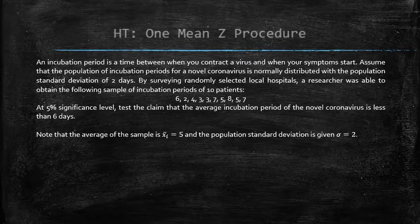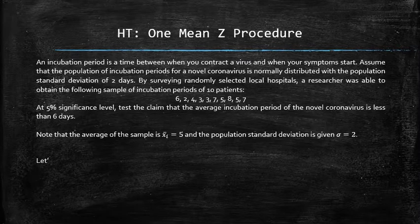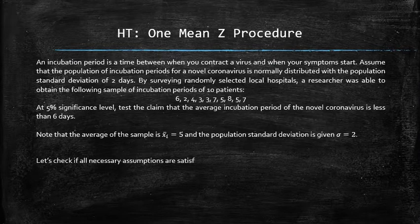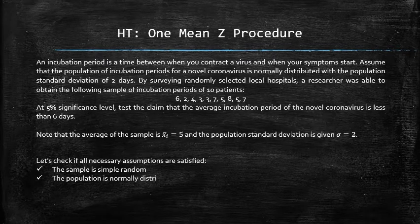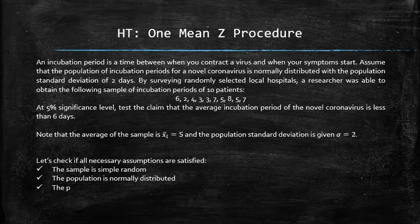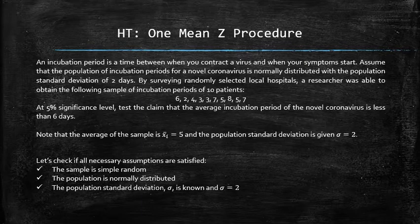Before we begin the 1-mean-z procedure, let's check if all necessary assumptions are satisfied. The sample must be assumed simply random — if not, then the results of the test are invalid. The central limit theorem must be applicable, so either the population must be normal or the sample size must be greater than 30. In our case, the population is given to be normal. Also, the population standard deviation must be known, and it is equal to 2 in our case.